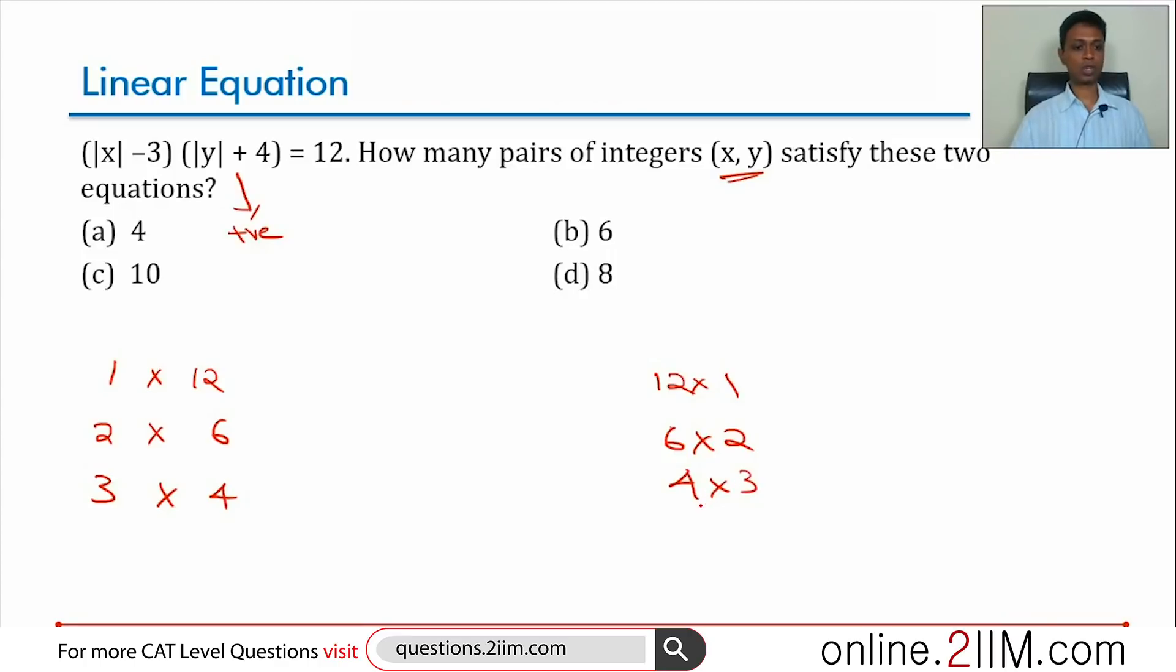All we are going to do is solve for |x - 3| = 1, |y + 4| = 12 and see if it is feasible. |x - 3| = 1, so |x| = 4. |y + 4| = 12, so |y| = 8. This seems feasible, so this is possible.